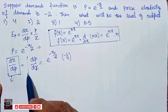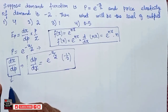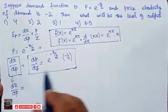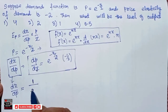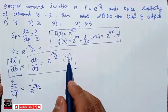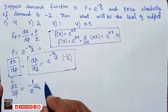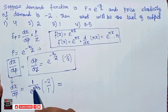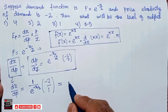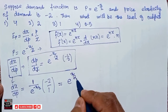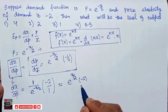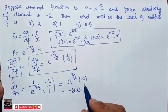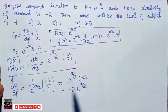To find dx divided by dp, we just reciprocate dp/dx. So dx divided by dp equals 1 divided by e to the power minus x divided by 2, multiplied by the reciprocal of minus 1 by 2, which is minus 2. We can rewrite 1 over e to the power minus x divided by 2 as e to the power plus x divided by 2. So dx/dp equals minus 2 e to the power x divided by 2.